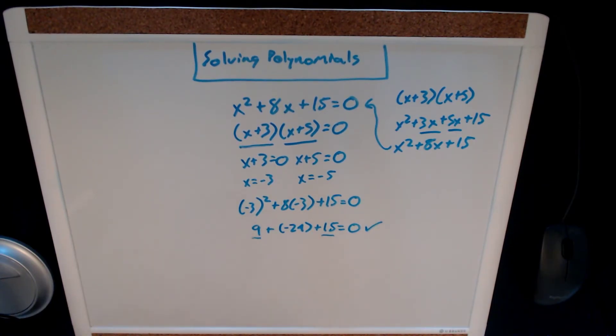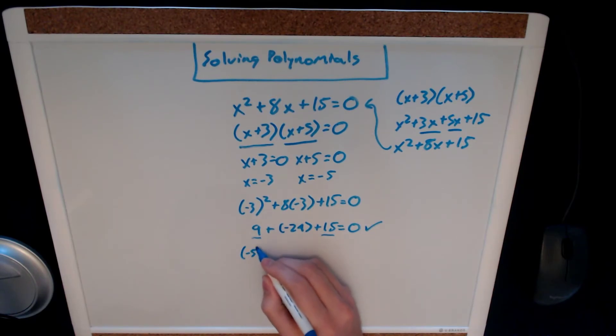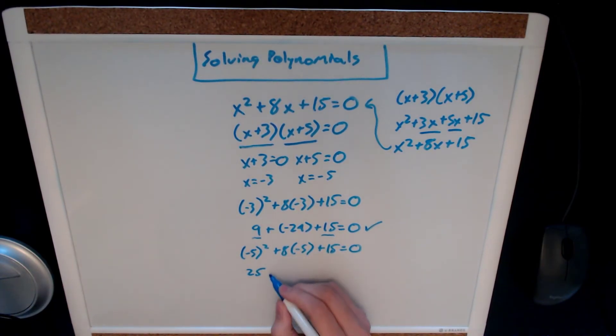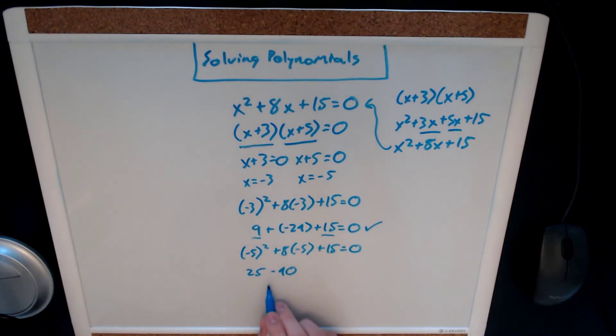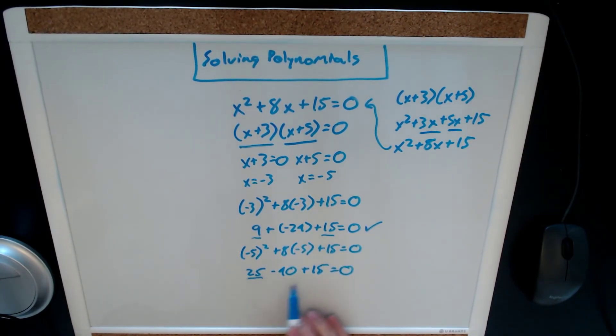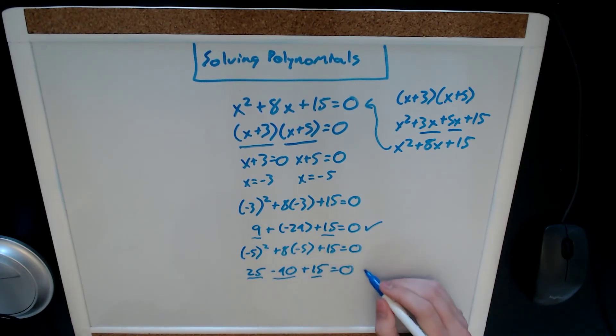We can do the same thing with the negative 5. Negative 5 squared plus 8 times negative 5 plus 15 equals zero. Negative 5 squared is 25. 8 times negative 5 is negative 40. So we're going to bring it straight to minus 40 plus 15 equals zero. And again we'll take our positive terms 25 and 15, add them together which equals 40. Then we'll subtract our negative value which is negative 40. 40 minus 40 equals zero. This checks out.